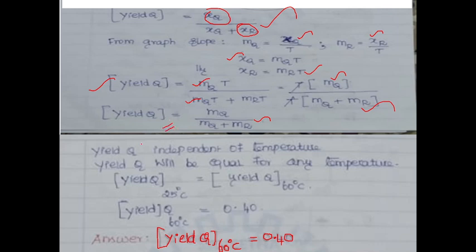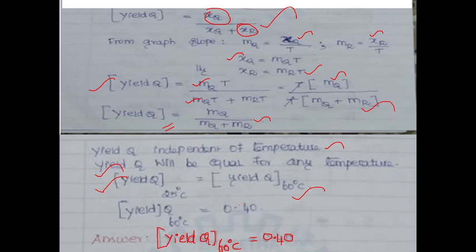This shows that yield of Q is independent of temperature — there is no temperature relation in the expression. Therefore, the yield of Q will be equal for any temperature. Since yield of Q at 25°C is 0.40, the yield of Q at 60°C is also equal to 0.40.